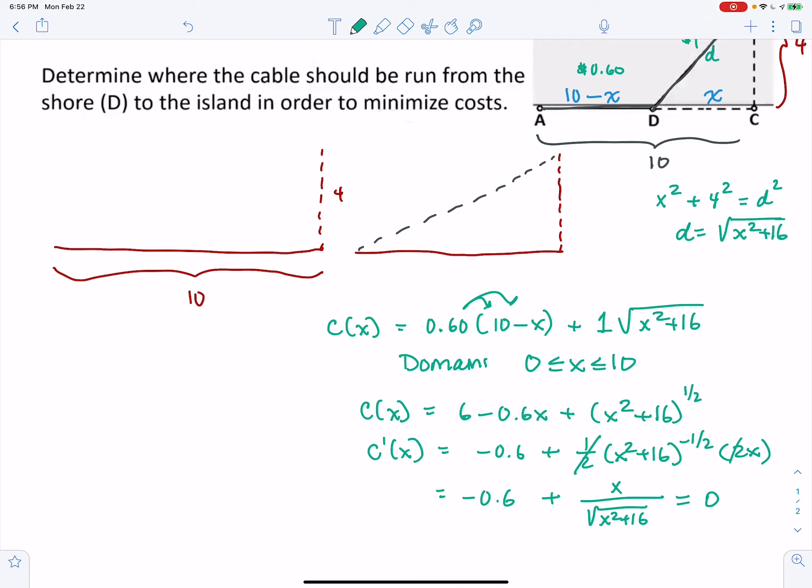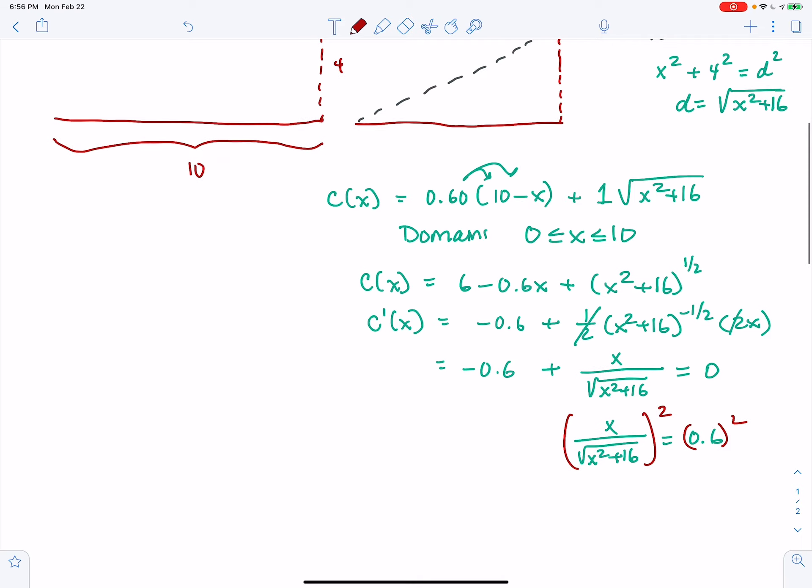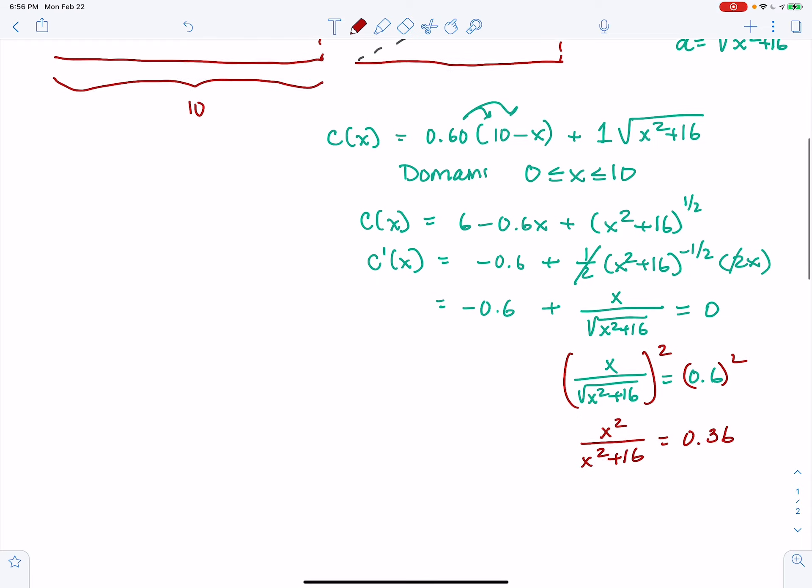This thing is never undefined because the denominator is never 0, so we don't even have to worry about that. You square something and add 16, you're never going to get 0. So I'm going to move the 0.6 to the other side to make everything positive. And then I'm going to square both sides because I don't want that square root in my equation. I want to deal with an equation I know how to solve, and that means eliminating radicals. So this means we have X squared over X squared plus 16 equals 0.36. Much easier to solve. We only have X squared terms. We can definitely handle this.